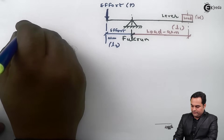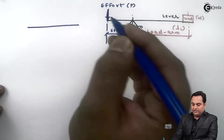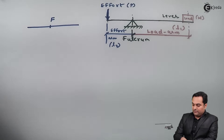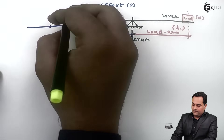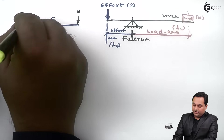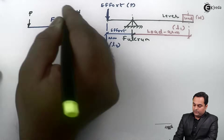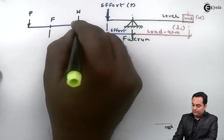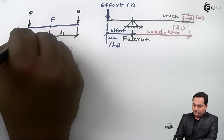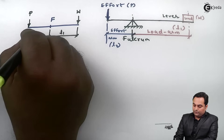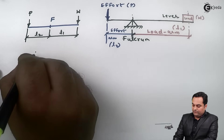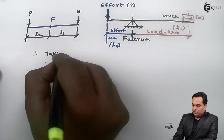The lever can be represented in a more simplified diagram: a horizontal line with the fulcrum at the center, load on one side at distance L1, and effort on the other side at distance L2.